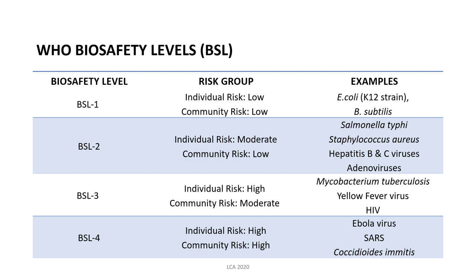The individual risk and community risk are low for microorganisms under BSL 1. For BSL 2, this includes agents that cause human diseases. For example, we have Salmonella typhi, Staphylococcus aureus, Hepatitis B and C viruses, as well as adenoviruses. Personnel working in these laboratories require greater attention to prevent injuries such as cuts and ingestions. For the individual risk, there is a moderate exposure to the microorganisms, and for the community risk, it is very low.